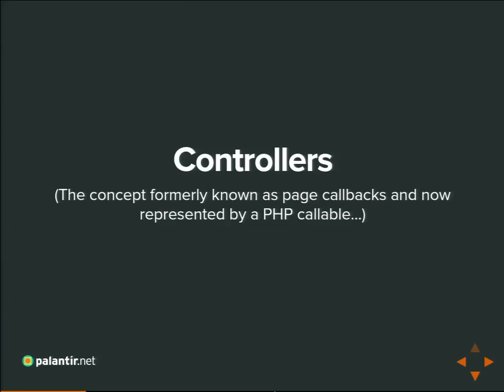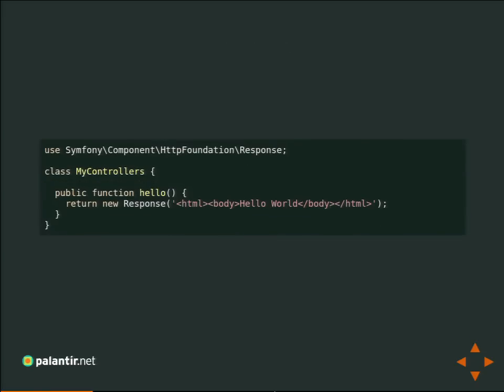In actual practice in Drupal, 99.9% of the time your controller will be a method of an object. So controllers can be dead simple. In this case, we've got a class `MyControllers` with a single method which returns a response. If this controller fires, it will return a response that is that HTML string, and you're done. No other theming happens, the theme system won't kick in, you won't get blocks, you won't get any filtering. You can control the entire output that way if you want to.